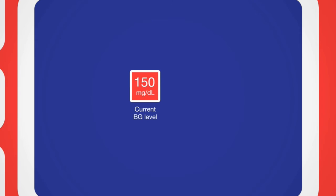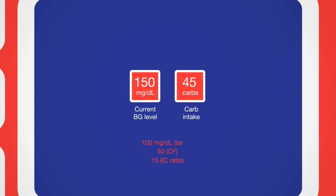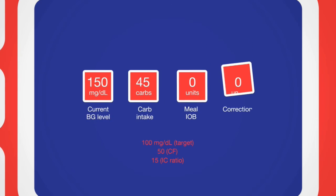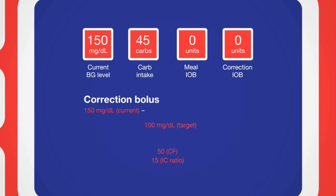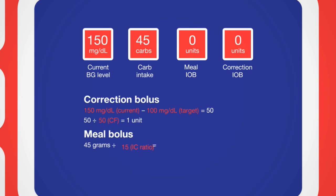Here is an example of how a bolus is calculated. Let's say your blood glucose value is 150 mg/dL, and you are about to eat 45 grams of carbs. Your insulin-to-carb ratio is 1 unit to 15 grams, your correction factor is 50, and your target BG is 100 mg/dL. This is your first bolus of the day, so you do not have any insulin on board. Your correction bolus would be your current BG of 150 minus your target BG of 100, which equals 50 mg/dL above your target. 50 mg/dL divided by your correction factor of 50 equals a 1-unit correction bolus. Your meal bolus would be 45 grams divided by your ratio of 15, which equals a 3-unit meal bolus. Therefore, 1-unit correction bolus plus 3-unit meal bolus equals a 4-unit suggested bolus.